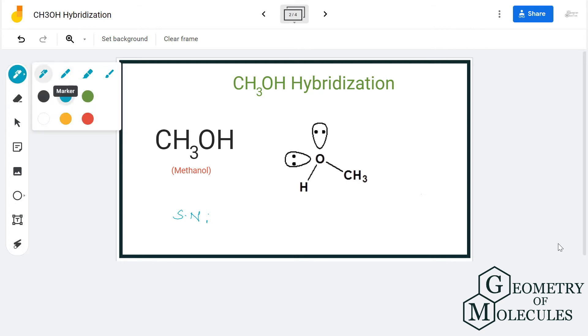So here there are no lone pairs on the carbon, but there are four atoms bonding to this carbon atom. There are three hydrogen atoms forming bonds with carbon and one OH group. So the total number of atoms forming bonds with the carbon atom is four. Hence, the steric number for carbon is four.